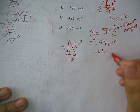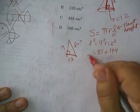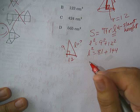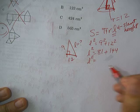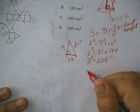81 plus 144. Then L squared would be 225. So L is 15.